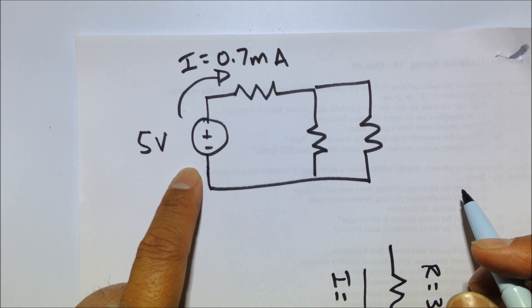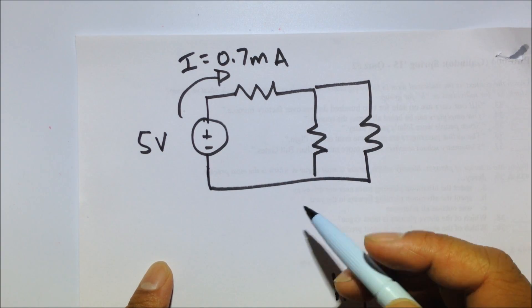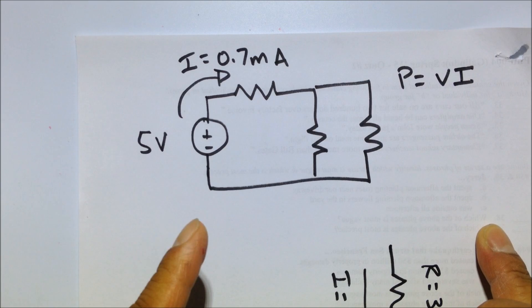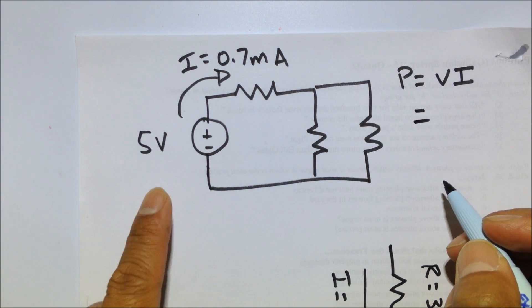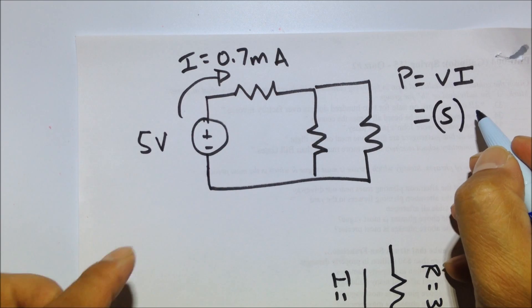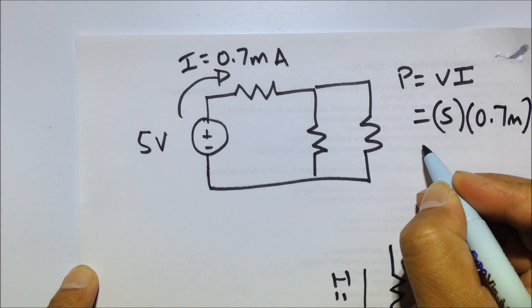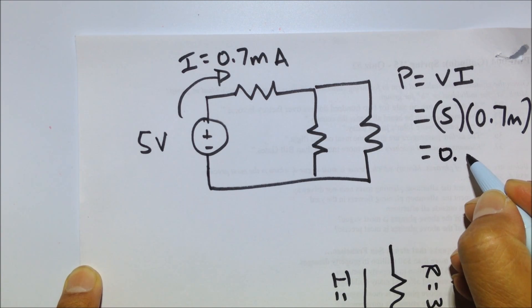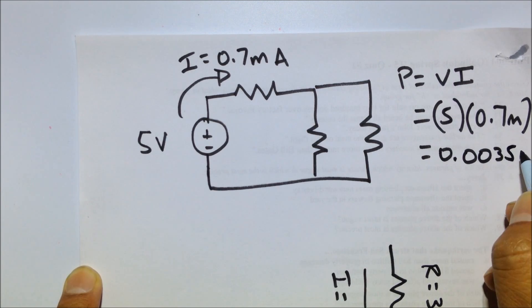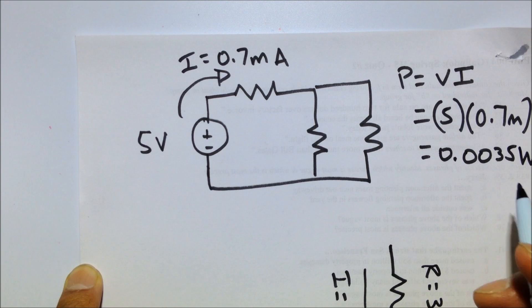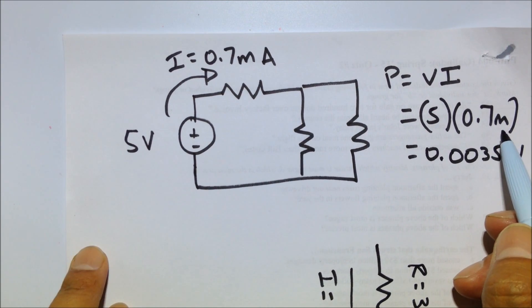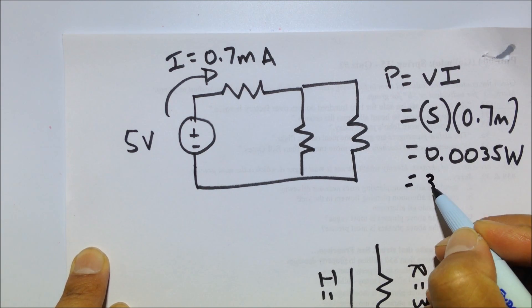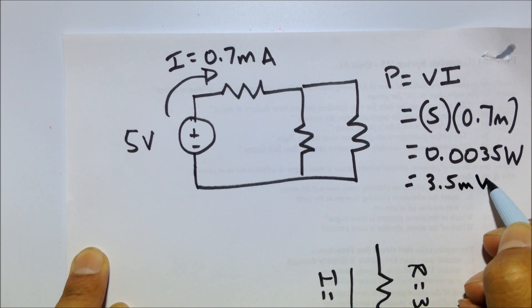we can calculate how much power this guy is supplying to the rest of the circuit. So here is our power equation, P equals V times I. V, which is our 5 volts, times I, which is our 0.7 milli, equals 0.0035 watts. Don't forget the milli, 10 to the minus 3. And we can rewrite this in terms of milliwatts as 3.5 milliwatts.